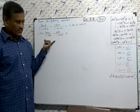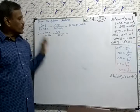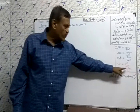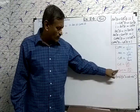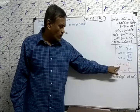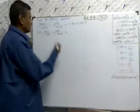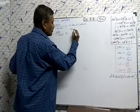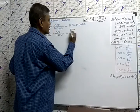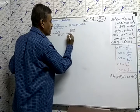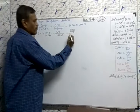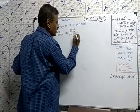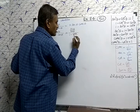I have taken the LHS. Everything we change into sine and cos because they are basic functions. Tan will become sine by cos, cot will become cos by sine. So I change: tan will become sine theta by cos theta.